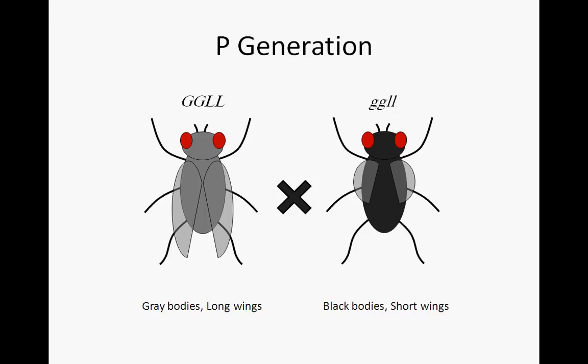In our parental generation, we will cross two pure-breeding individuals. A fly with gray body and long wings will mate with a fly of black body and short wings. Because these flies are pure breeding, we know them to be homozygous with genotypes big G, big G, big L, big L and little G, little G, little L, little L, respectively.